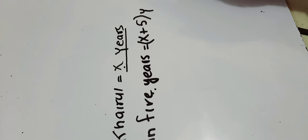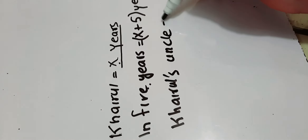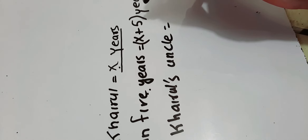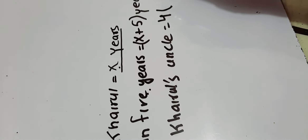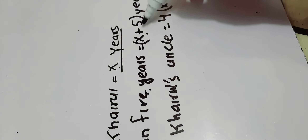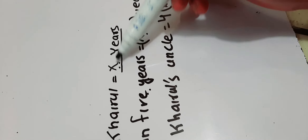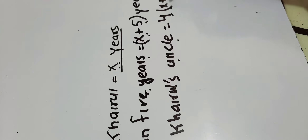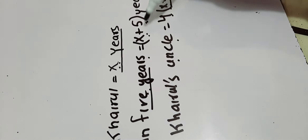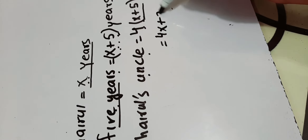Now, his uncle — Khairul's uncle is 4 times as old as Khairul will be in 5 years. Khairul will be x plus 5 years old in 5 years time. Khairul's uncle is 4 times, meaning 4 multiplied by Khairul's age in 5 years time, which is x plus 5. You multiply: 4 into x is 4x, 4 into 5 is 20.